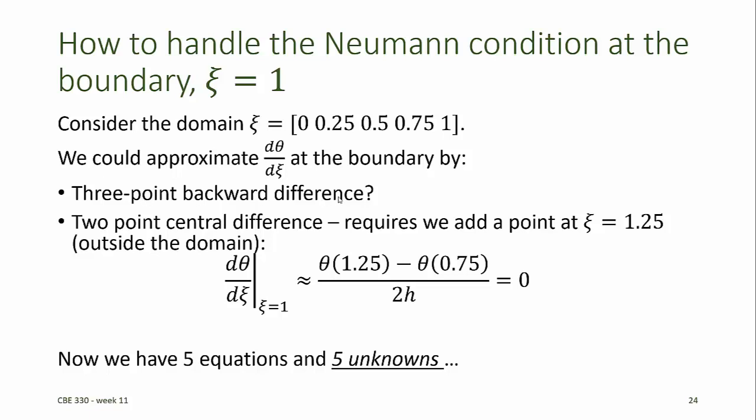We could write a three-point backward difference formula for the derivative d theta d zeta at zeta equals 1 and recall that we know d theta d zeta from the boundary condition. We could alternatively write a two-point central difference which would require that we add a point that's not really in the domain at zeta equals 1.25 and approximate that the heat transfer continues from the point 1 to 1.25 according to the same defining equation.